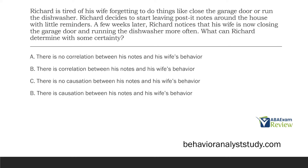A: there is no correlation between his notes and his wife's behavior. We certainly can't say that, because ever since he left post-it notes her behavior has changed — it seems correlated. B: there is correlation between his notes and his wife's behavior. Absolutely. Do we know if it's causing it? No, but it's certainly correlated. C: there is no causation. We can't say that either, because we haven't run any experiments. D: there is causation. We also can't be certain of that. All we know is there is correlation — as he leaves post-it notes, her behavior continues to change. The answer is B.